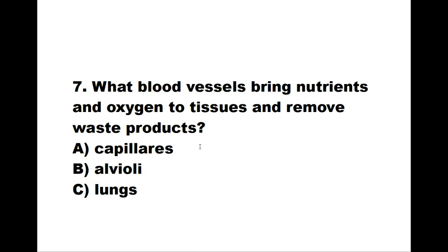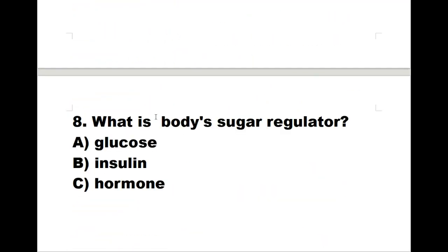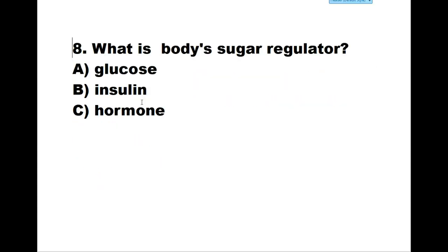Number seven: A: capillaries. B: alveoli. C: lungs. The correct answer is A, capillaries. Number eight: what is the body's sugar regulator? A: glucose. B: insulin. C: hormones. The correct answer is B, insulin.